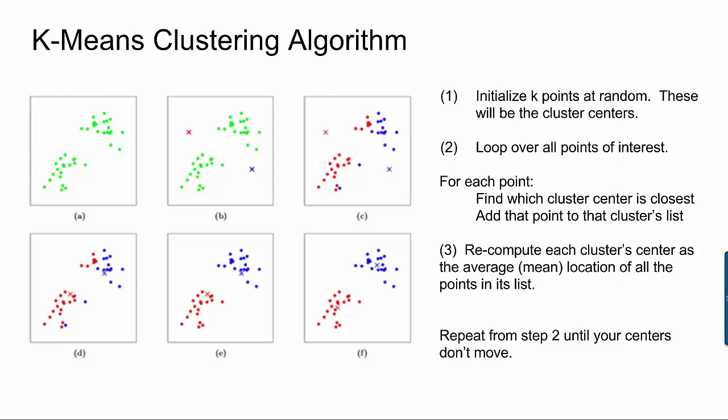So this sequence of images kind of depicts the steps of the algorithm. Remember that we're going to start with a certain number of clusters. So in our case, we're going to tell the algorithm that we want to be finding two clusters. The k in k-means is a constant that's intended to denote how many clusters are we trying to find. So the algorithm starts by you initializing k points at random. Each of these points is going to represent the center of one of your clusters.